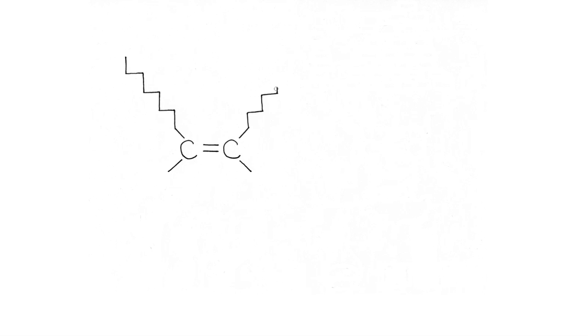The chains can extend out from the bond in the same direction, a cis orientation, or the chains can extend out from the bond in different directions, a trans orientation.